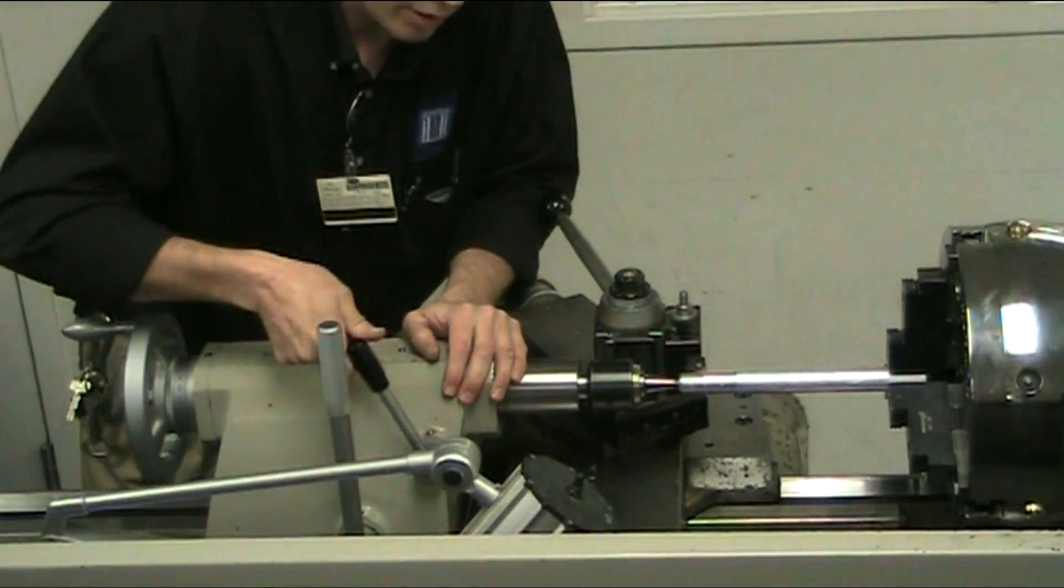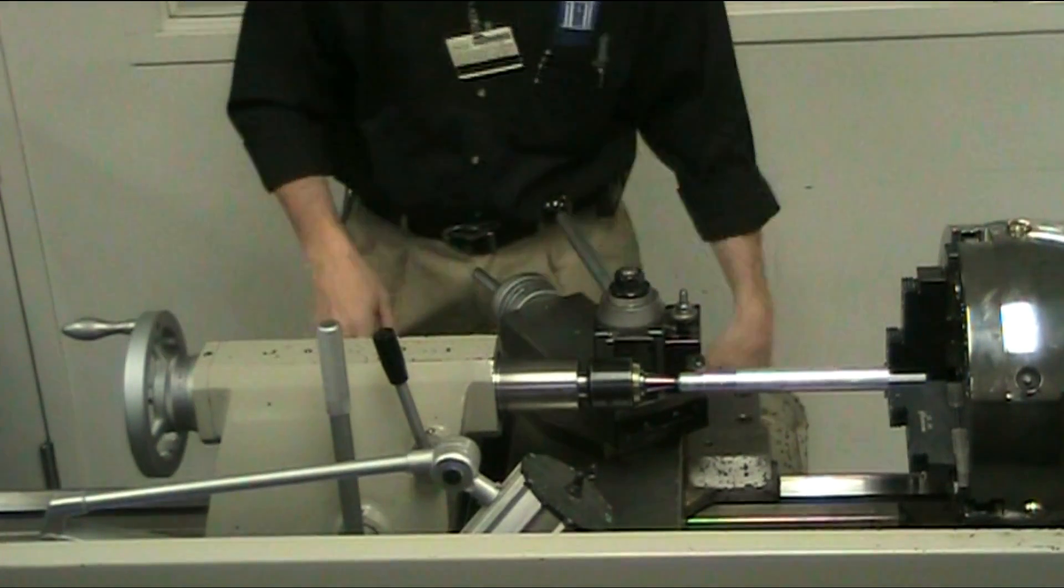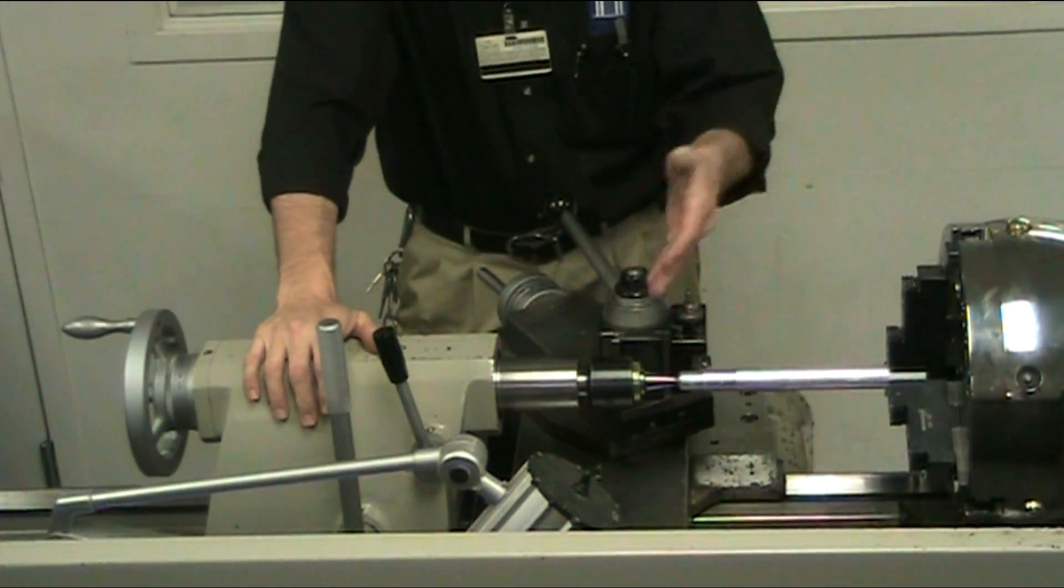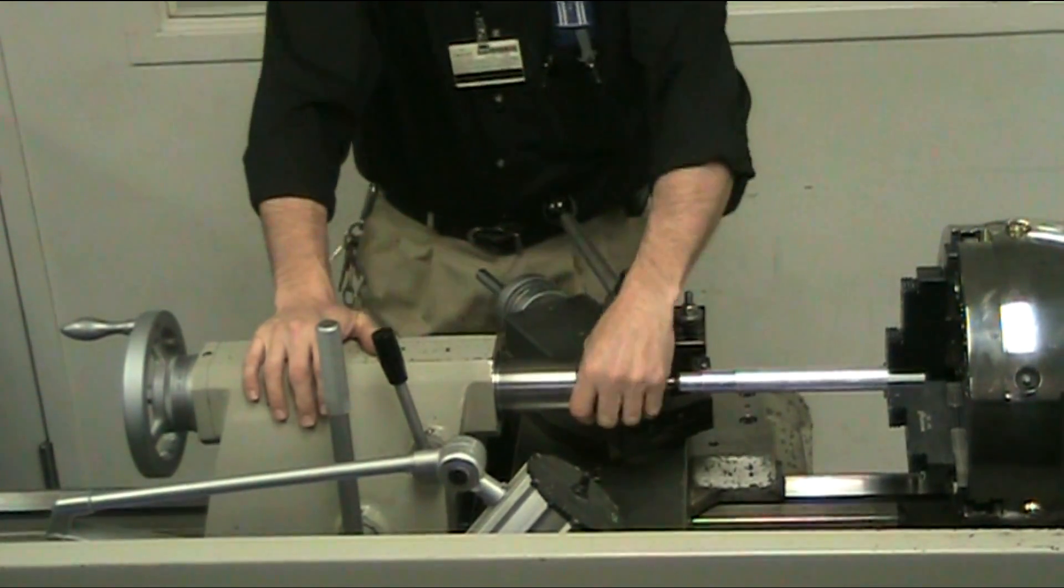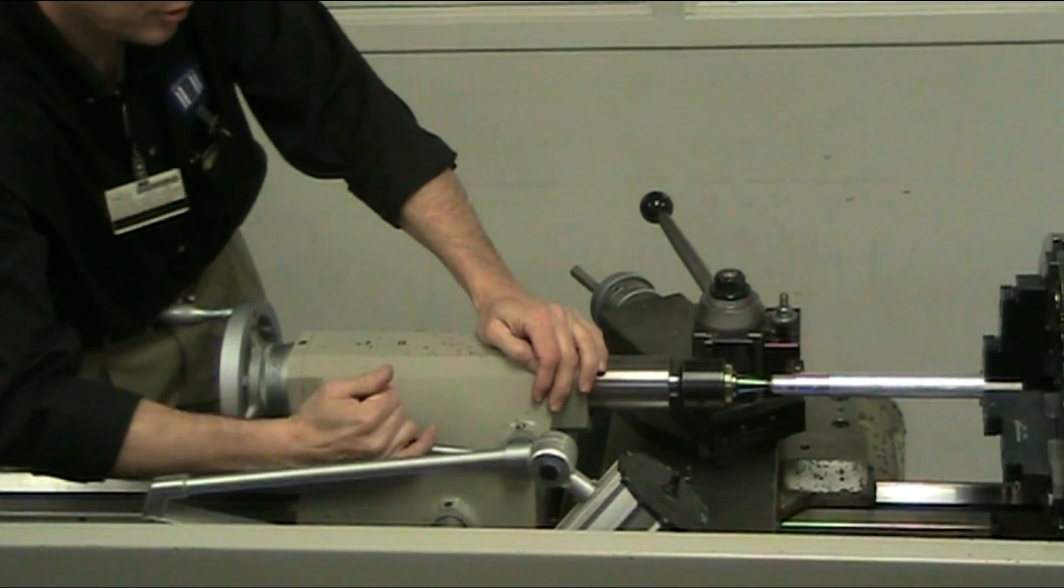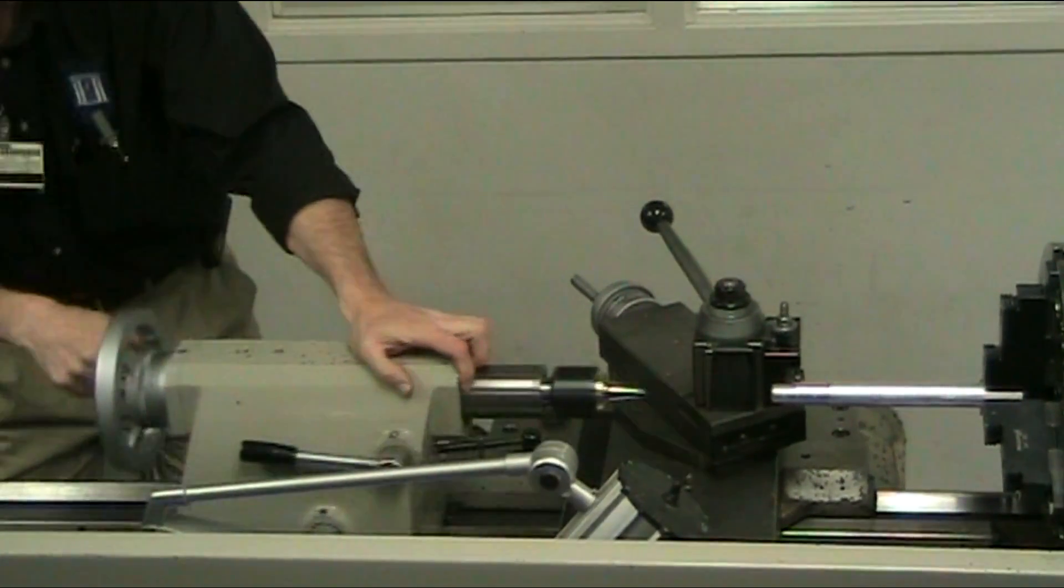Now you're ready to start turning on your lathe with a really long piece that's supported by your tail stock. To take this out, same way you would take out the drill chuck—you just loosen up the spindle lock and the tail stock lock, and you slide it back out of the way.